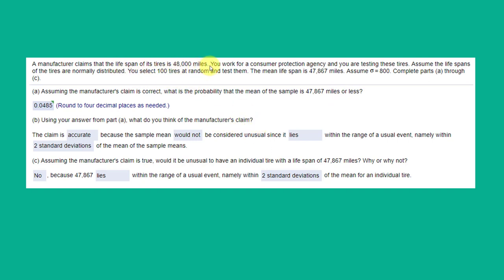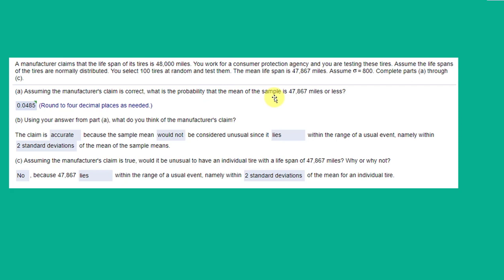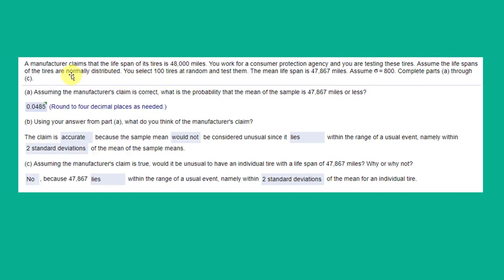Then part C, assuming the manufacturer's claim is true, would it be unusual to have an individual tire with a lifespan of 47,867? I emphasized individual tire here and mean of the sample there because those are key things you need to pick up on when you're reading this. You're given the clue that the population is normally distributed. From looking at this, given the fact that you're given the mean of the population, standard deviation of the population, and a mean of a sample, that should clue you that this is a normal distribution problem.